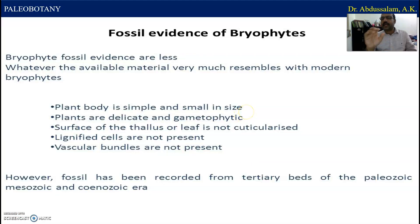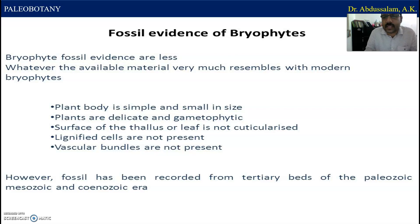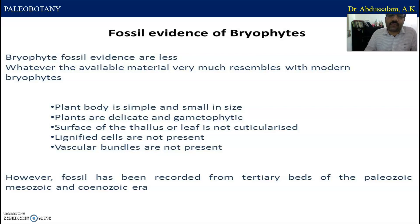Another important category is called Bryophytes — fossil evidences of Bryophytes. Bryophyte fossil evidences are comparatively few. Whatever available material very much resembles modern bryophytes. The plant body is simple and small in size, plants are delicate and gametophytic, the surface of the thallus or leaf is not cuticularized, lignified cells are not present, and vascular bundles are not present. All these are the most important characteristic features of fossil bryophytes.